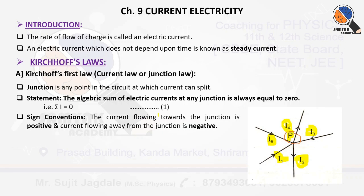Whenever a current is going to flow towards the junction, that particular current is taken as positive. And when that current is going to flow away from the junction, then it is going to be considered as negative. So if it is traveling towards the junction, it is positive; and when it is traveling away from the junction, it is negative. These are the sign conventions.